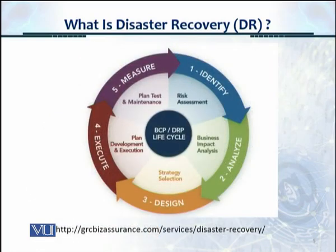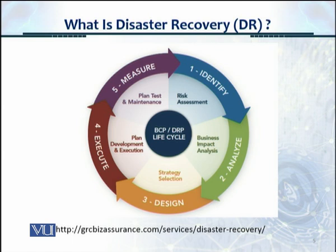This diagram shows the DR and business continuity lifecycle. First, you identify risks and do a risk assessment, then you analyze those risks with an impact analysis — rating each risk's impact, probability, and likelihood, and prioritizing them. Based on the risks and threats, you design a solution and adopt a strategy. Step four is plan development and execution — you develop a complete plan, put up a DR site, and implement the business continuity plan. Finally, you measure: plan tests and maintenance, conduct DR drills or business continuity drills, and then the lifecycle continues.